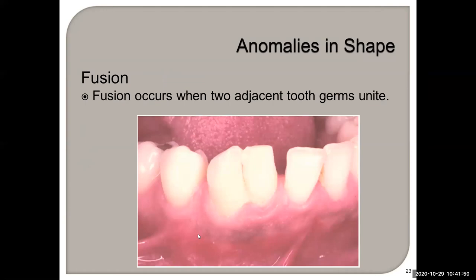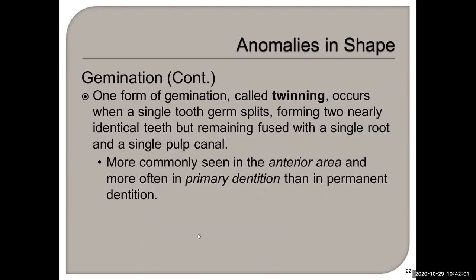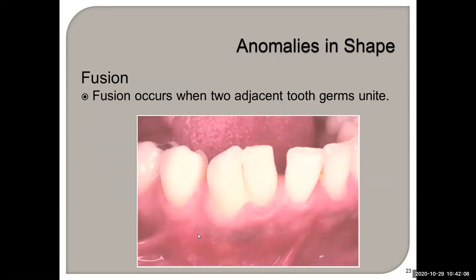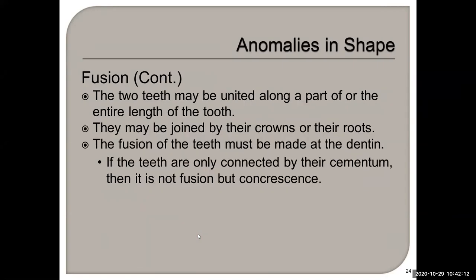Fusion occurs when two adjacent tooth germs unite. Fusion involves two teeth united along part of or all of the entire length of the tooth — so the crowns may be joined or the roots may be joined. If the teeth are only connected by the cementum, that's a different condition called concrescence. When the cementum of one tooth is connected to the cementum of another, it's called concrescence — not fusion.